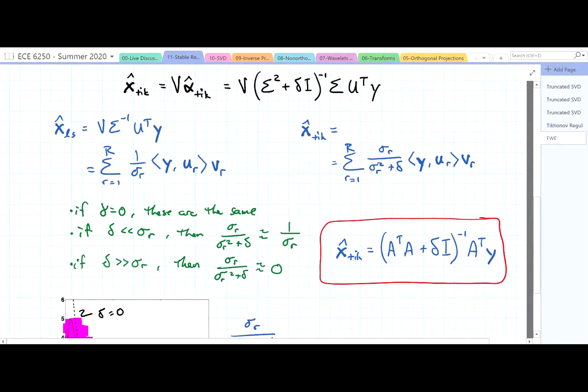If we were to compare our standard least squares approach to the Tikhonov regularized approach, we can see the least squares approach uses our pseudo inverse, which I've written in terms of its SVD decomposition. And the Tikhonov regularization uses this modified thing that we have above.